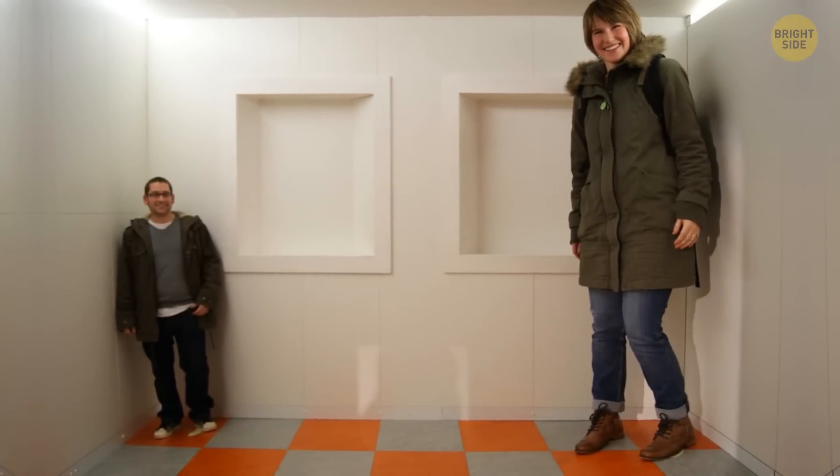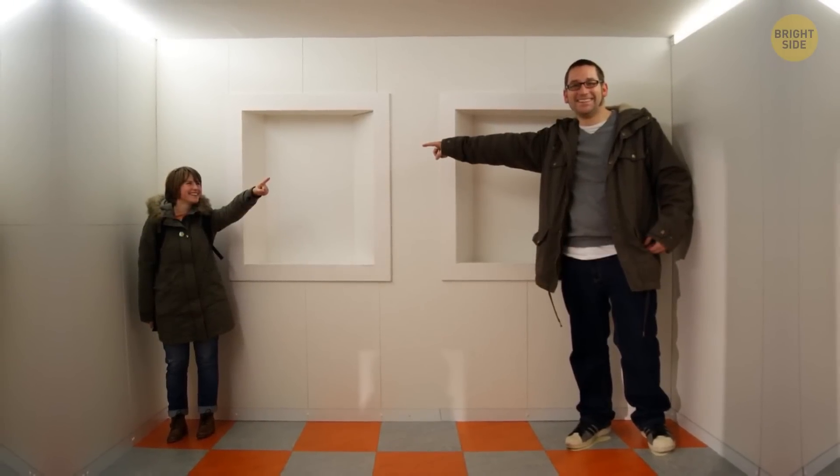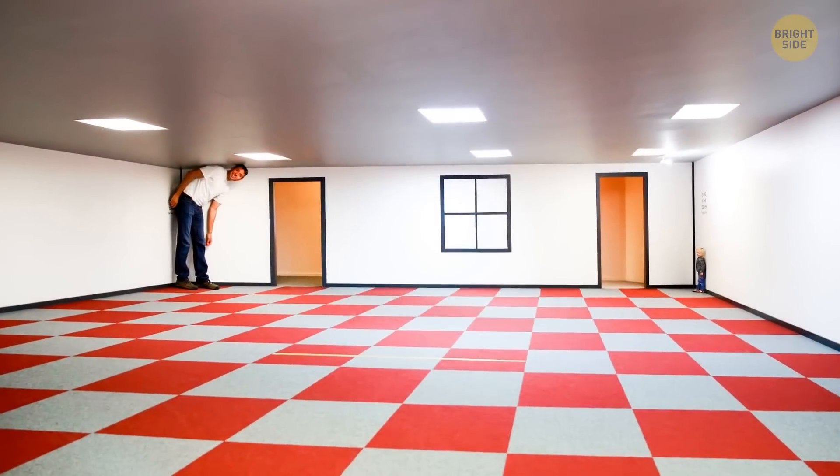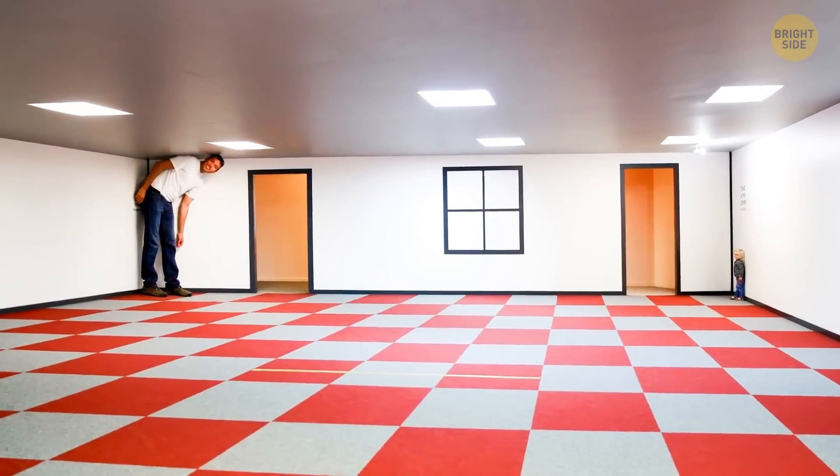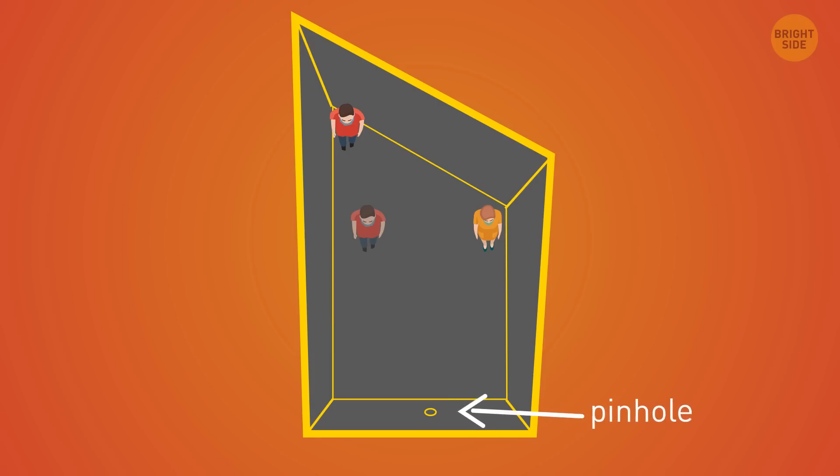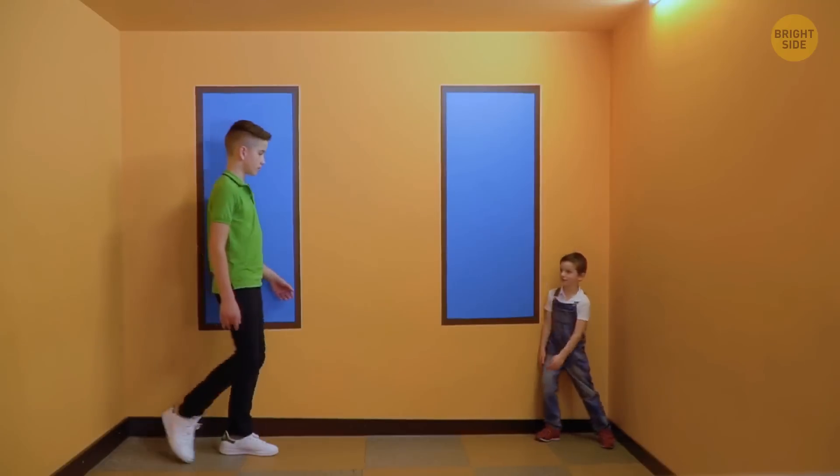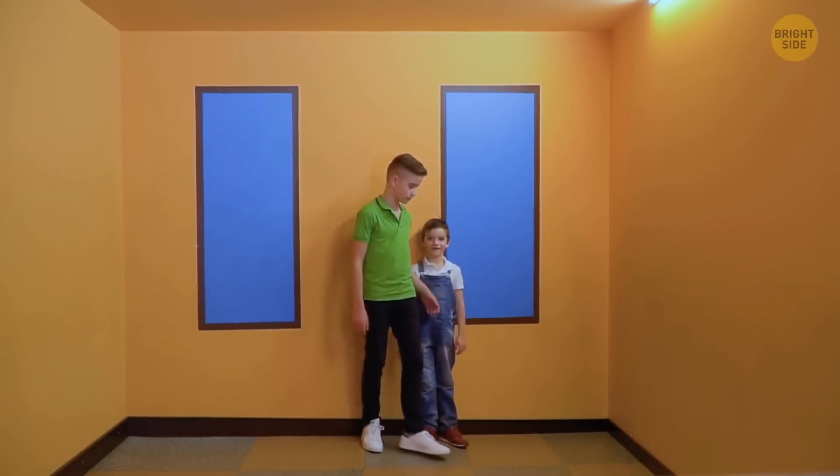Although one of them looks twice the size of the other, these guys are of the same size. They're placed in an Ames room, invented by an American ophthalmologist in the 1940s. You'd have to look into a pinhole at a room that seems to be a regular square, but is a trapezoid. The walls and ceilings are tilted, and this makes your eyes see one person tower over another, even when they move around.